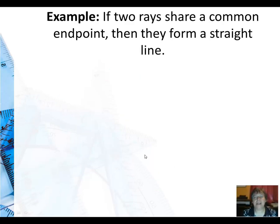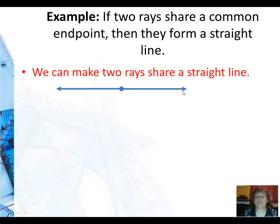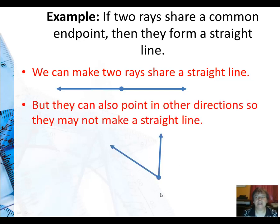And now for our last example. If two rays share a common end point, then they form a straight line. So let's see, can I draw two rays that share a common end point and form a straight line? There you go. So we can do it. Can I draw it differently so this point is shared between both rays, but it's not a straight line? Yes, I can. So they can point in other directions. I can turn one of the rays. So this is a sometimes.